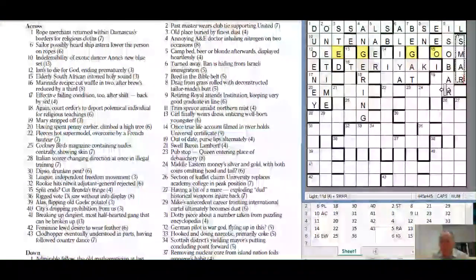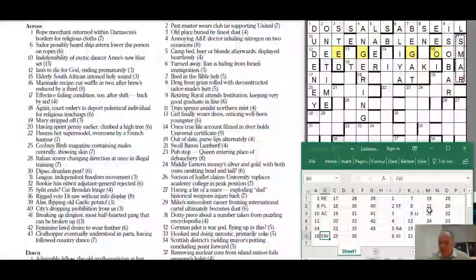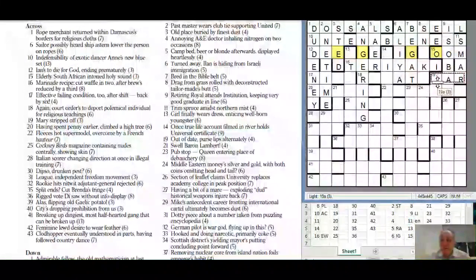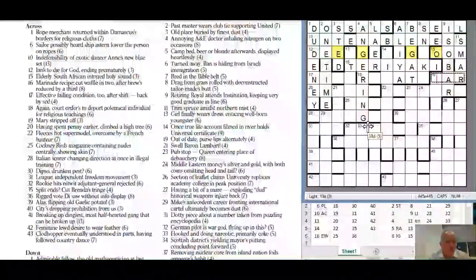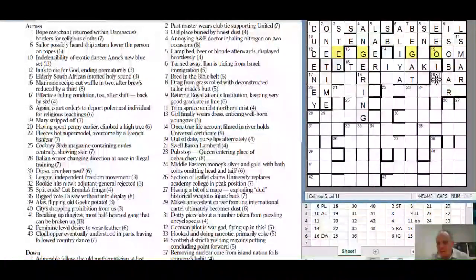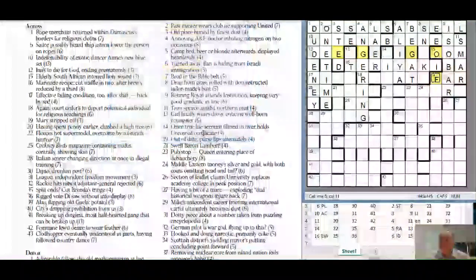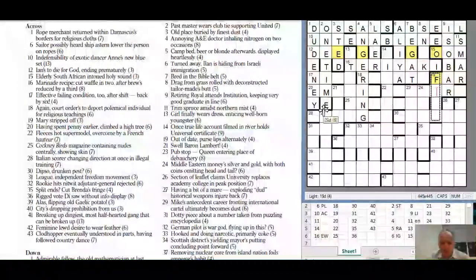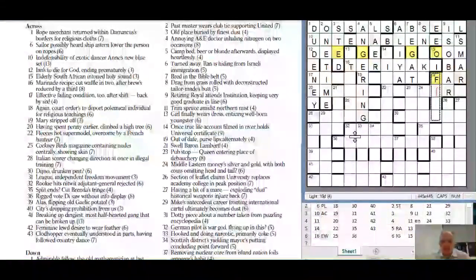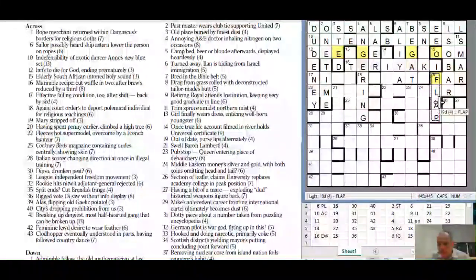Nineteen across: Mary stripped off - just R. Off is far and the F there is another extra letter in a fairly neat pattern. Nineteen down: out of date purse lips alternately - so it's L-P so it's probably flap. Maybe it's not this cell that's the extra letter maybe there is a jump in the extra letters.